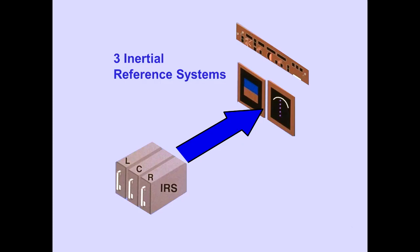Three Inertial Reference Systems, left, center, and right, provide flight information to the flight instruments.